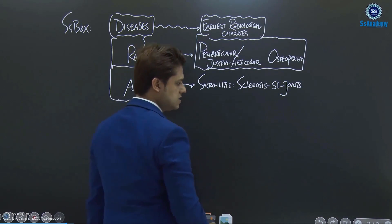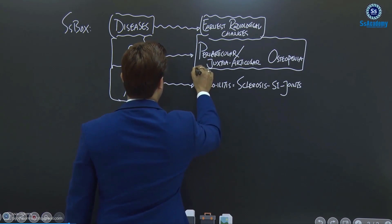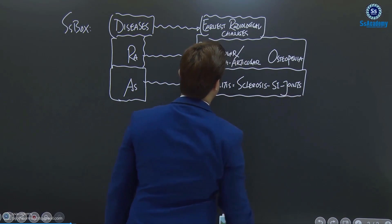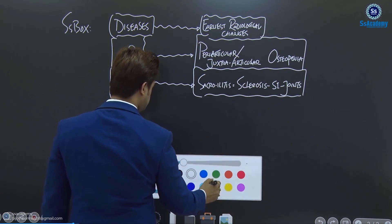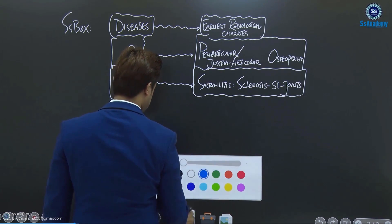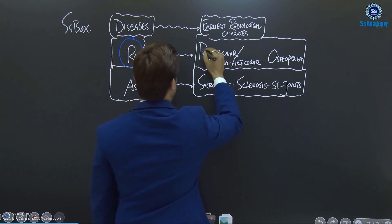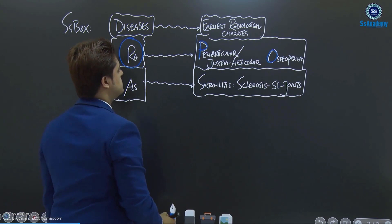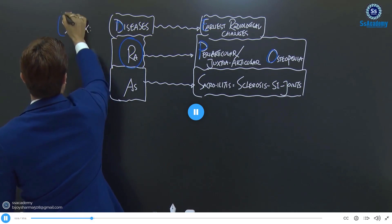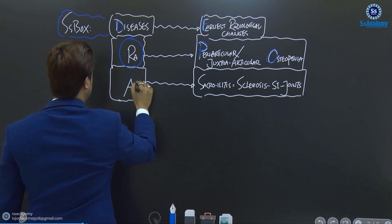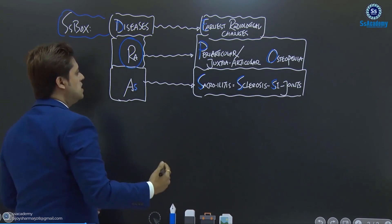Sclerosis of the SI joints means you can see some of the irregularities of the SI joints. The earliest radiological changes of ankylosing spondylitis — so if you write down rheumatoid arthritis, it is the periarticular osteopenia, that is the most earliest radiological sign. And for ankylosing spondylitis, the S4 sacroiliitis — it is S4 sclerosis of SI joints — that is the earliest radiological sign.